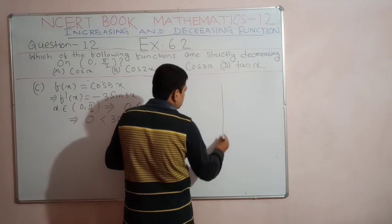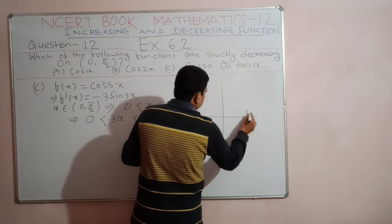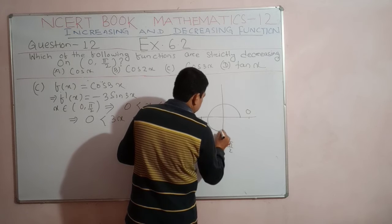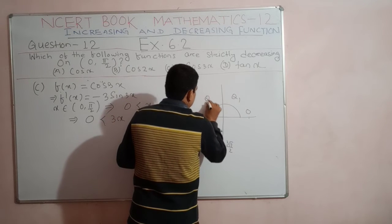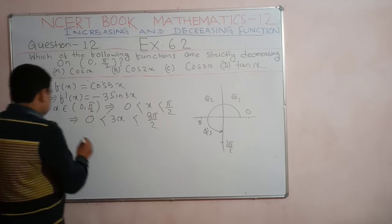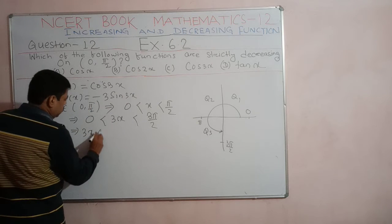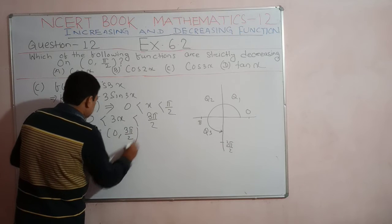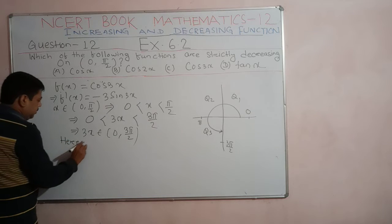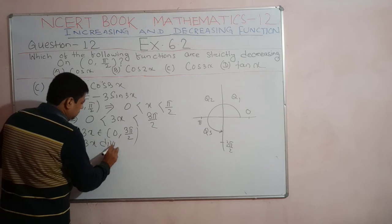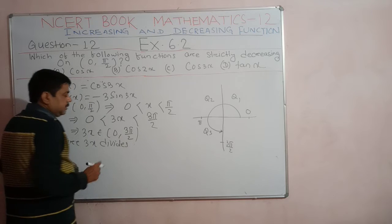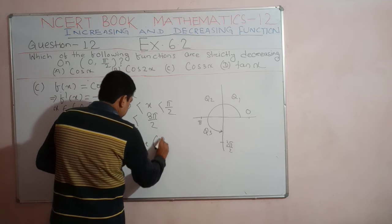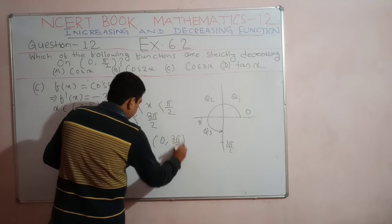The angle 3x lies between 0 and 3π/2, covering the first, second, and third quadrant. This interval 0 to 3π/2 is divided into two sub-intervals: one is 0 to π, and the other is π to 3π/2.